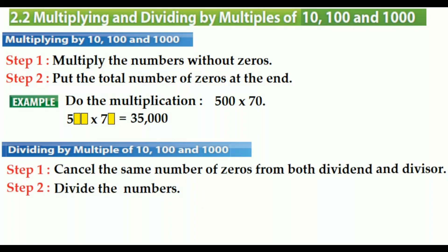Let's see an example about dividing by multiples of 10, 100, and 1000. Do the division: 1,800 divided by 30. First of all, let's look at how many same number of zeros we have at the end. One zero in the divisor, two zeros in the dividend. So we are going to just cancel one zero from here and one zero from here, because one is the same number of zeros.